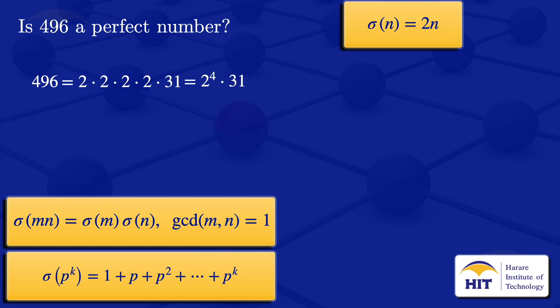Since 2 to the power 4 and 31 are relatively prime, we can use the multiplicative property, and we have sigma(496) equals sigma(2 to the power 4) times sigma(31).